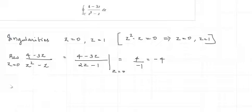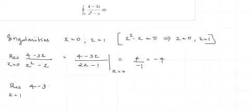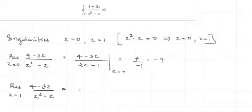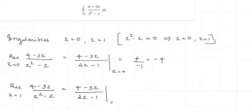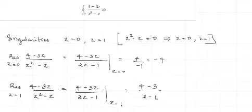Now we find the residue of the function at Z = 1. Using the same P/Q form, we evaluate (4 − 3Z) / (2Z − 1) at Z = 1. We get (4 − 3) / (2 − 1), which equals 1/1 = 1.